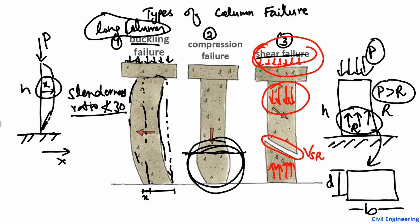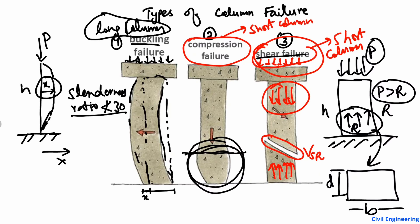Shear failure mostly occurs in short columns, and compression failure also mostly occurs in short columns, not in long columns. So depending on the type of column, there are three different kinds of failure: buckling failure mostly due to lateral deformation in long columns; compression failure due to lower compressive capacity; and shear failure due to lower shear resistance of the concrete column section.